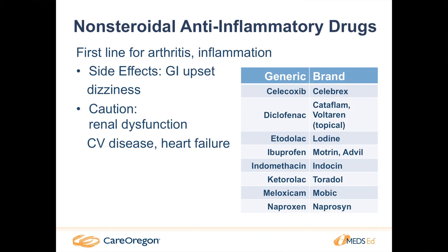We also can't talk about pain without talking about NSAIDs. NSAIDs are considered first-line treatments for inflammatory diseases like osteoarthritis. We're familiar with the common side effects — GI upset and dizziness. And there are a few patients we wouldn't want to use NSAIDs in as a first choice, especially those with renal dysfunction or cardiovascular disease.